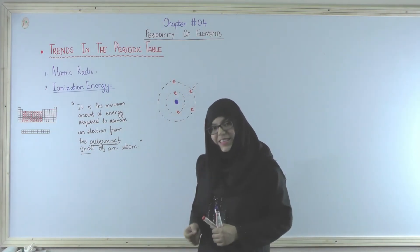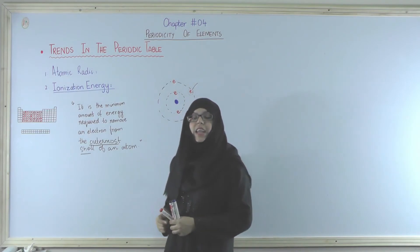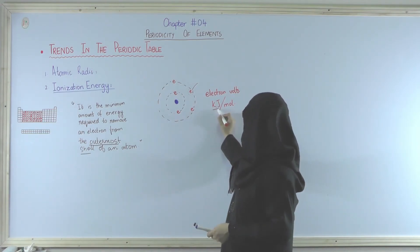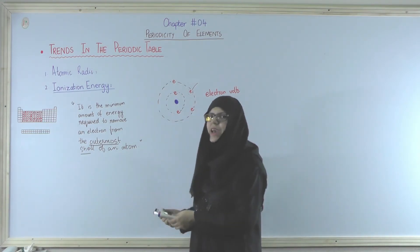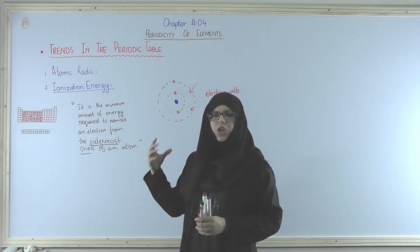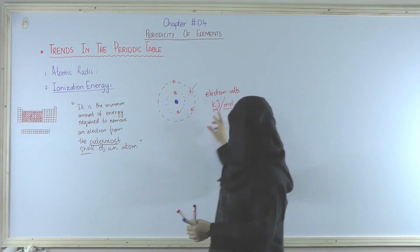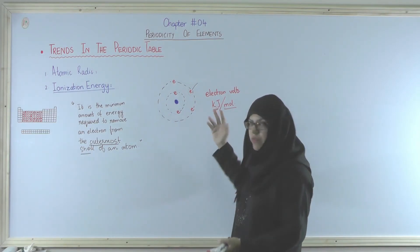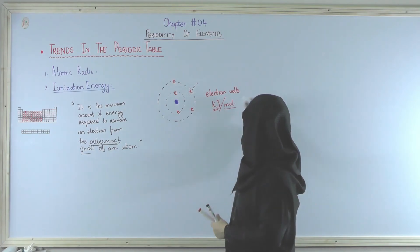This energy is calculated in electron volts, or kilojoules per mol. Kilojoules per mol ka matlab hai ke hamare paas itni energy lagegi hai ek mole electron ke outermost shell mein se electrons ko move karne ke liye. When we talk about the units we take a standardized unit. Ek mole ke electrons ko remove karne ke liye kitni energy chahiye which is calculated in kilojoules. Otherwise we can also calculate it in electron volts. Iska short form hai E.V.